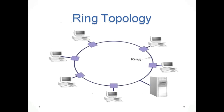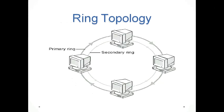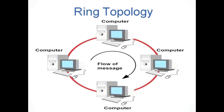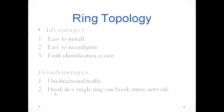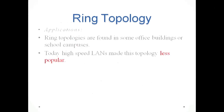All systems are connected in a single ring. This ring topology has two connections: one is the primary ring and another is the secondary ring. The flow of messages is in one direction only and cannot be reversed. Advantages: easy to install, easy to reconfigure, and fault identification is easy. Disadvantages: unidirectional traffic — data is transmitted in one direction only — and a break in the ring can break the entire network. Applications: found in office buildings or school campuses, though high-speed LANs have made this topology less popular.